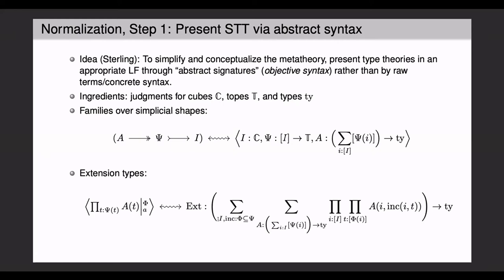And the extension type former can then be presented also in this language. As a parameter, it takes a shape inclusion necessarily defined over the same cube context, then a family as above, depending on the larger shape, and a partial section. And it gives back a type, the extension type.